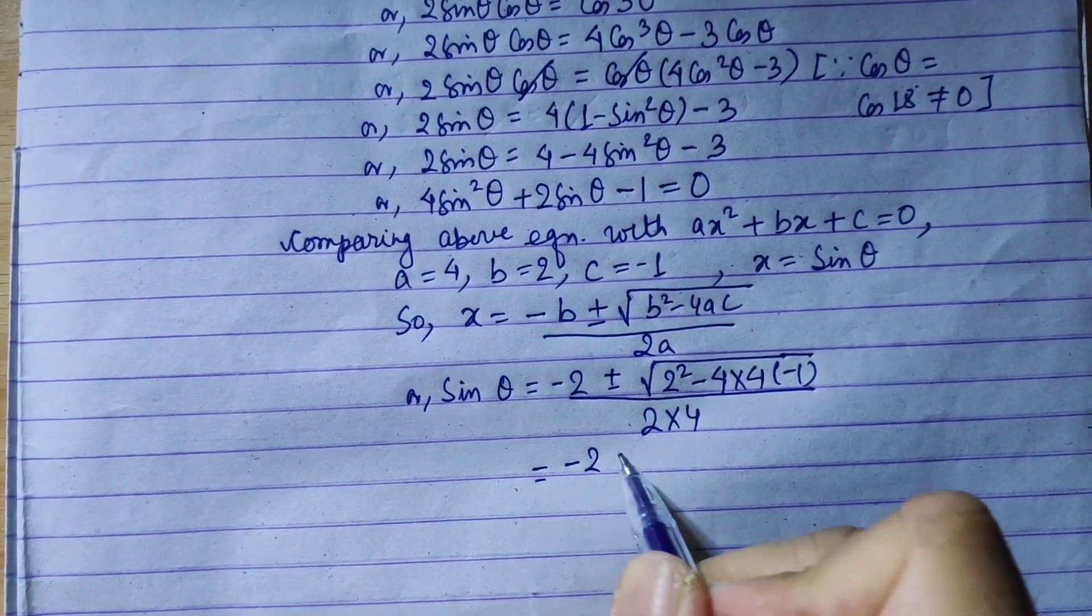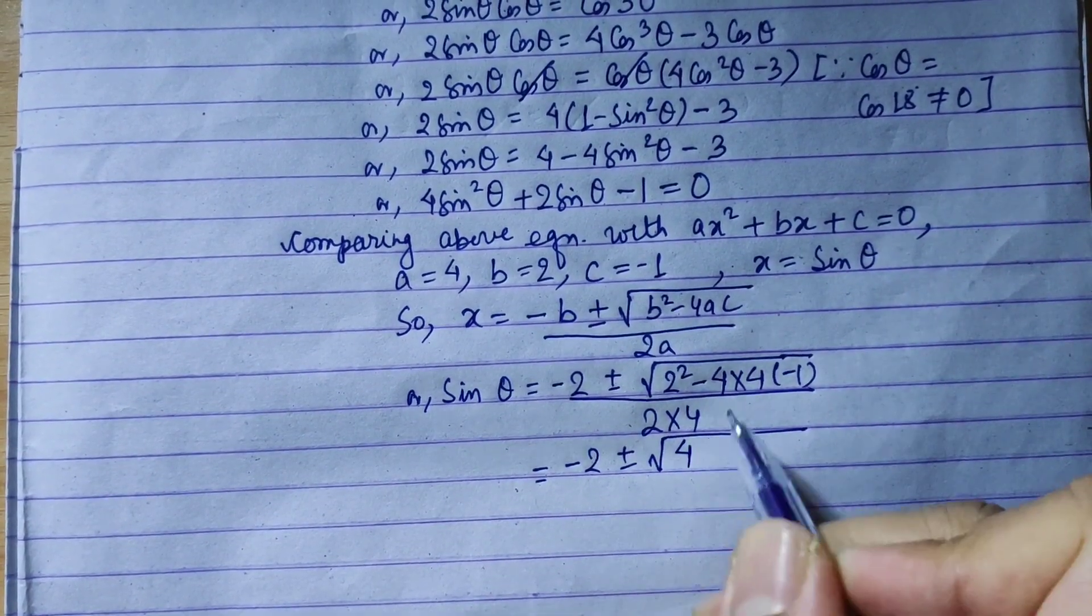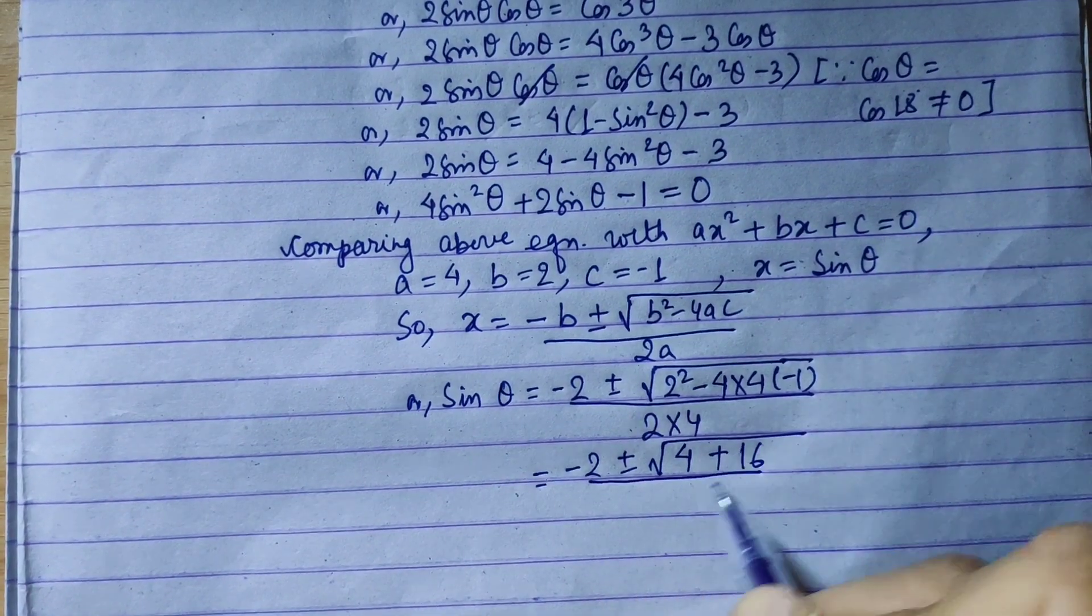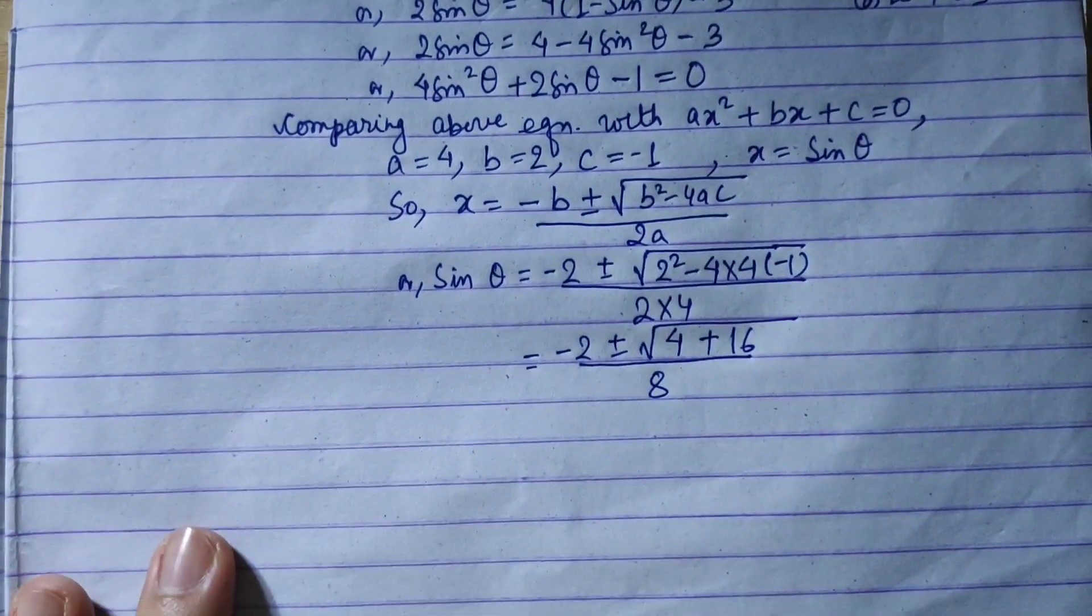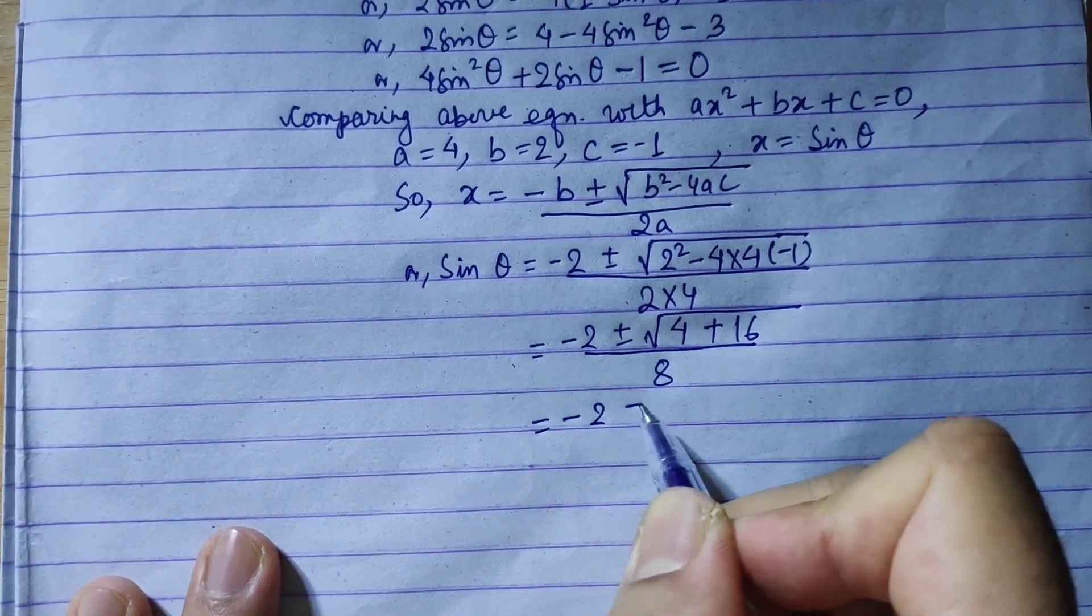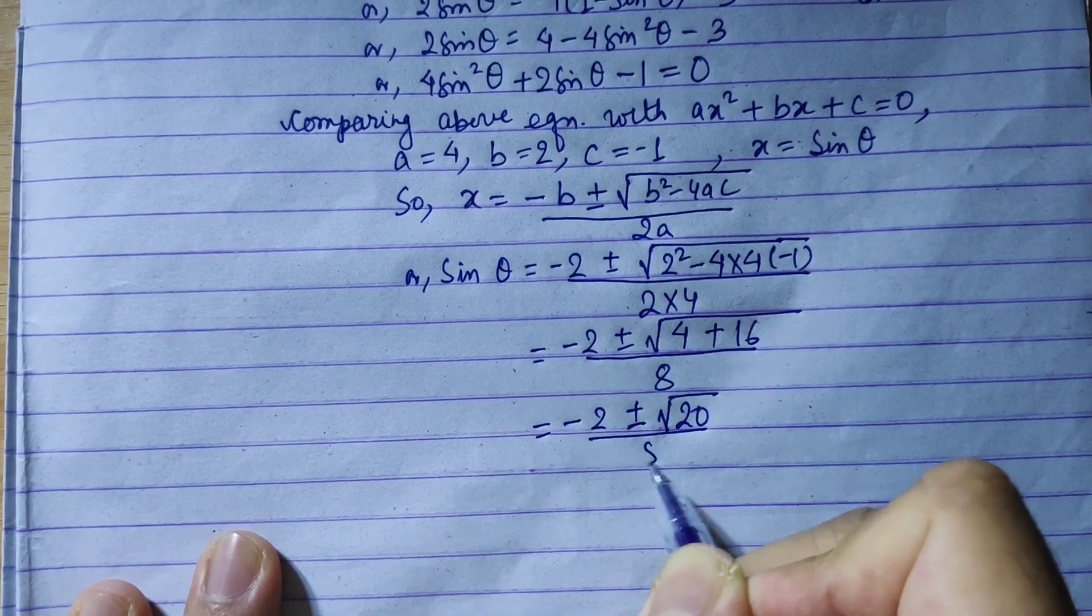Minus 2 plus minus under root 2 square is 4, minus minus is plus 16 whole upon 8. Simplifying, minus 2 plus minus under root 20 by 8.